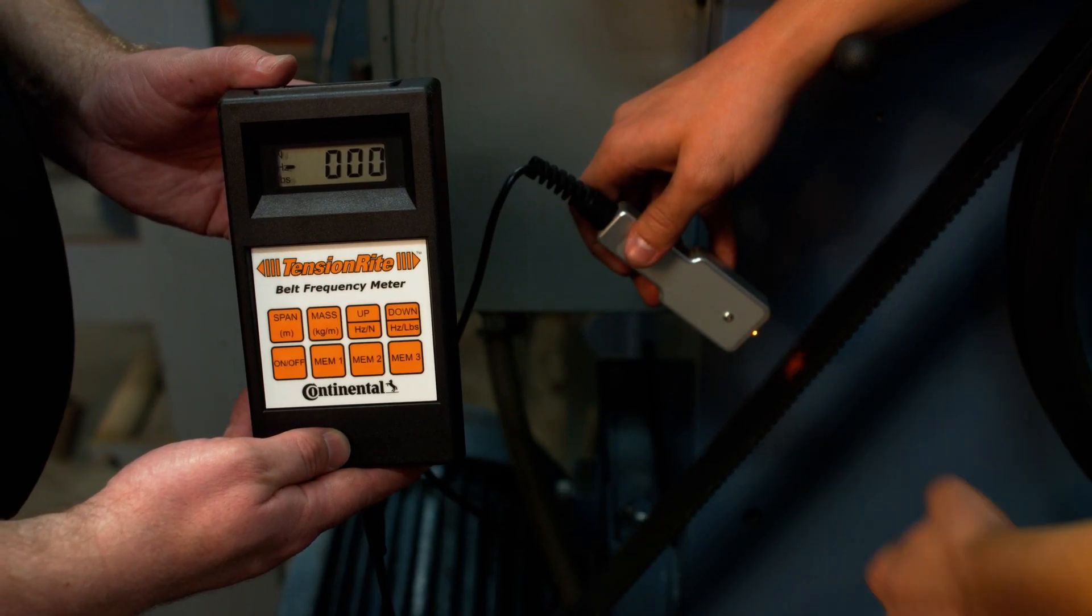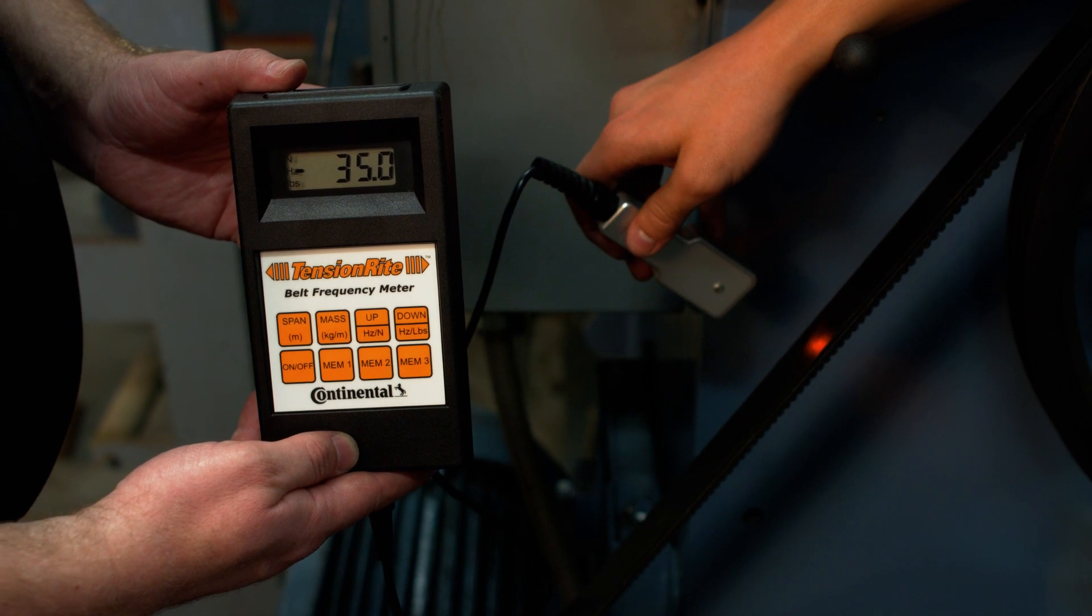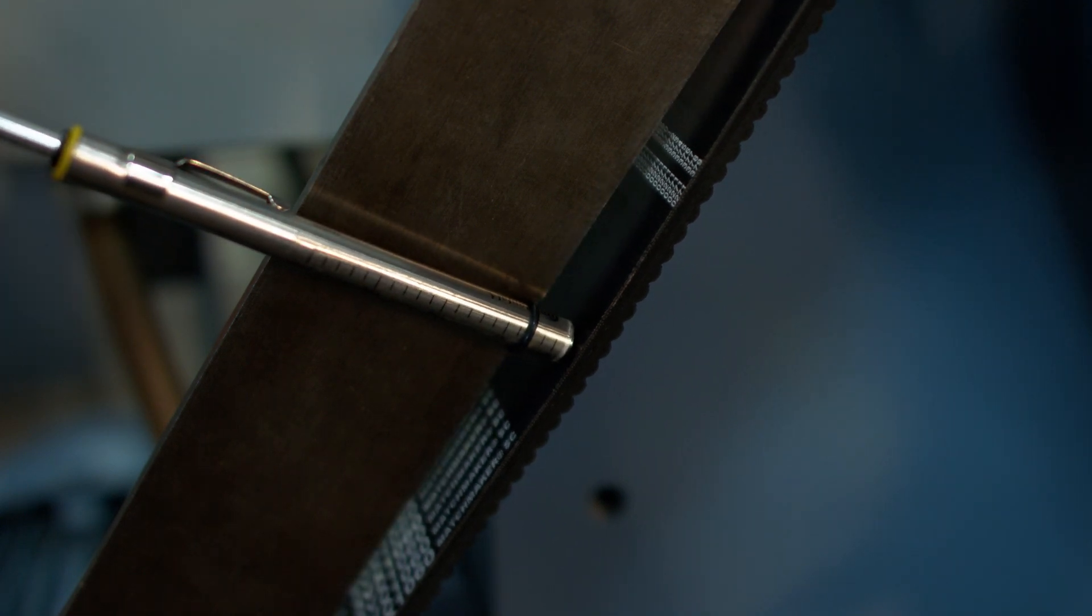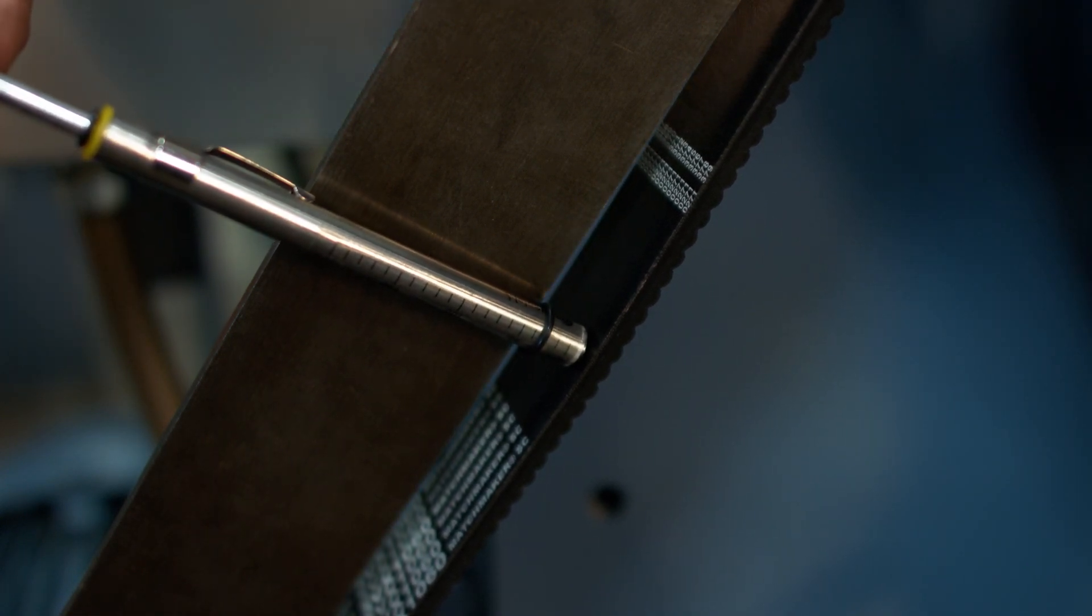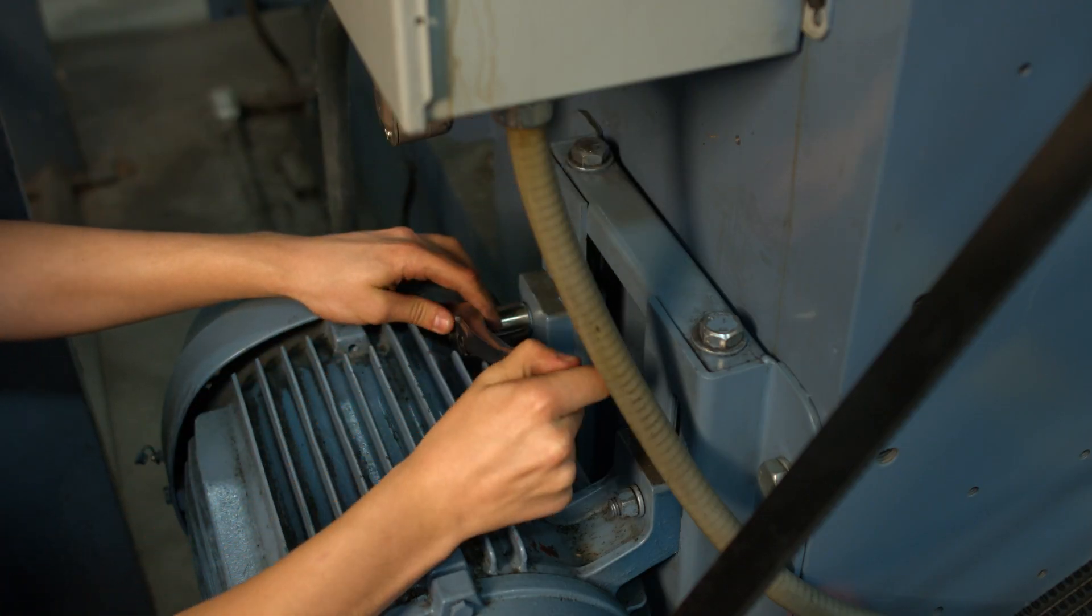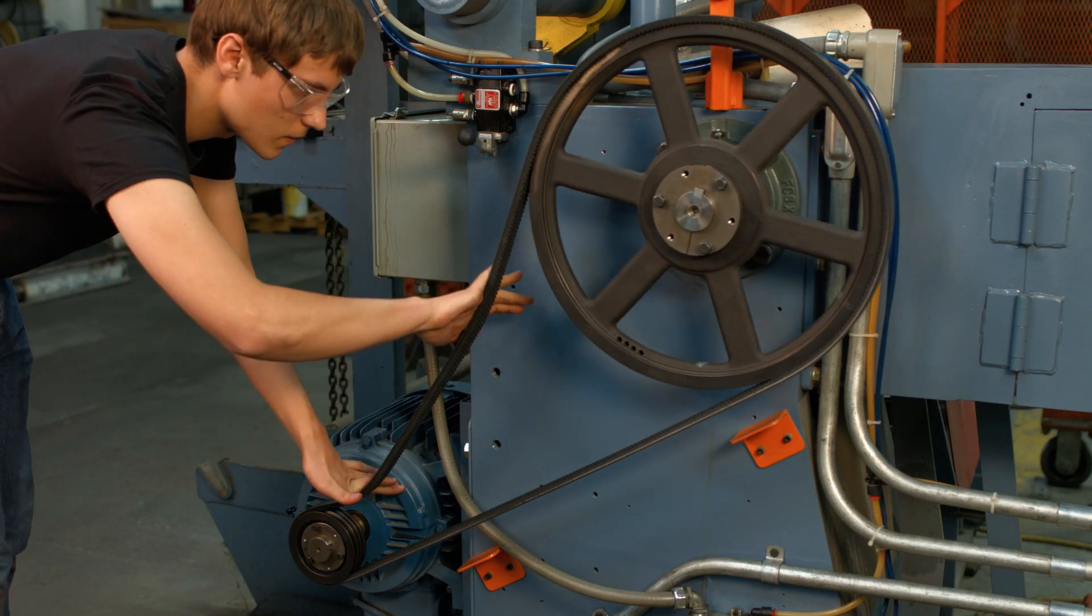The ideal tension is the lowest tension at which the belt will not slip under peak load conditions. Continental offers multiple tools for defining a target tension: drive design software, tension calculator, and tension tables. When you install belts at optimum tension, you save time and money.